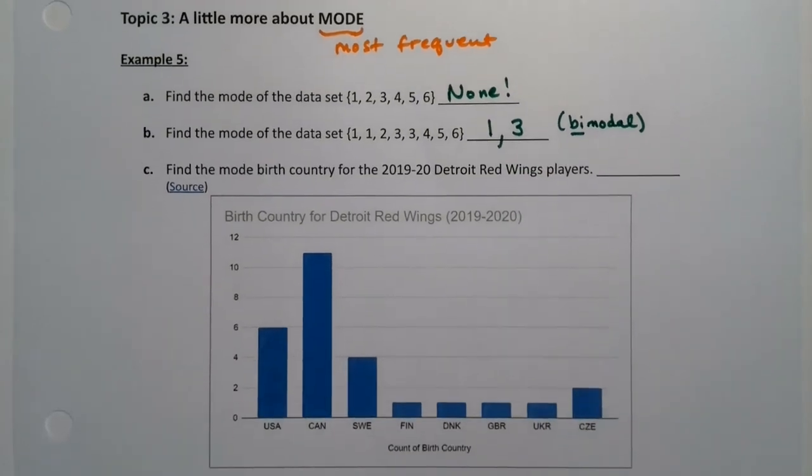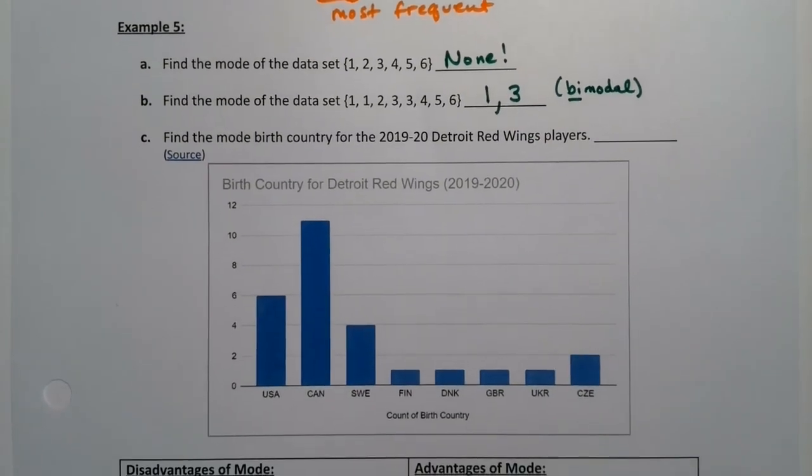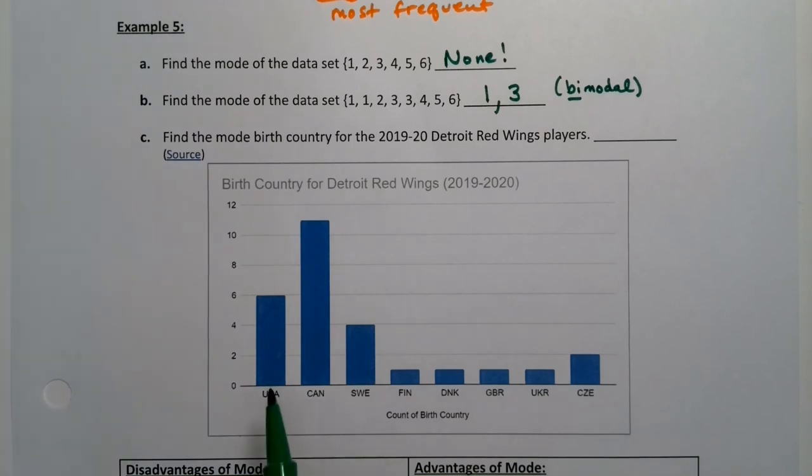Now let's find the mode birth country for the Detroit Red Wings players. So here are the countries of birth for the 2019-20 roster of players on the Detroit Red Wings, which is a hockey team in Detroit, Michigan. And the country of birth, the mode is Canada.